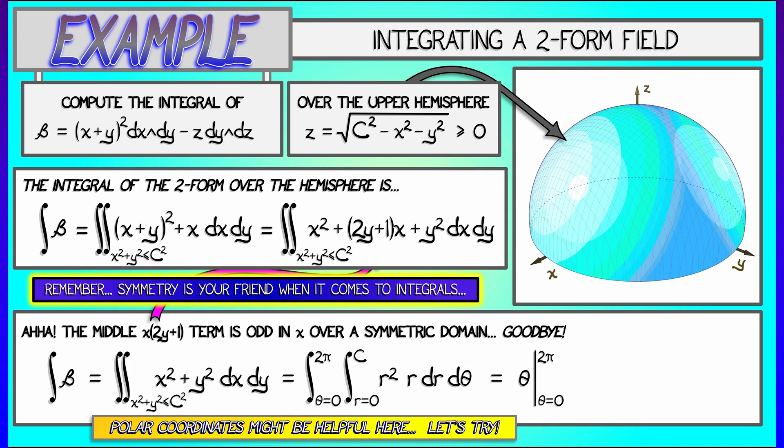Integrating d theta first gives me theta from 0 to 2 pi. Integrating r cubed gives me r to the 4th over 4 from 0 to c. That gives me a final answer of pi times c to the 4th over 2. That's a good example.